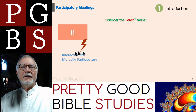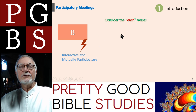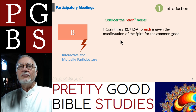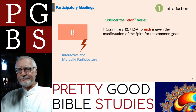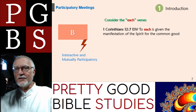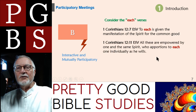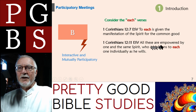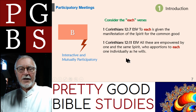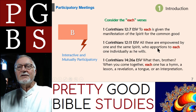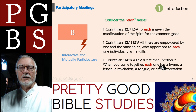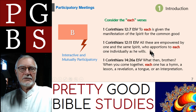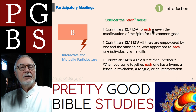Part C: interactive and mutually participatory — how can we know that? Let's consider the 'each' verses. 1 Corinthians 12:7: 'To each is given the manifestation of the Spirit for the common good' — not just the pastor. 1 Corinthians 12:11: 'All these are empowered by one and the same Spirit who apportions to each one individually as he wills.' 1 Corinthians 14:26: 'When you come together, each one has a hymn, a lesson, a revelation, a tongue, or an interpretation.' Each one — all of us, from top to bottom, not just the one guy at the front.